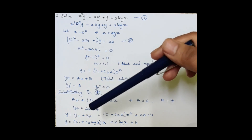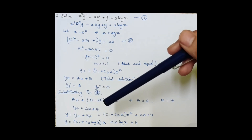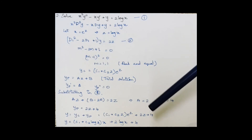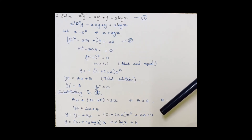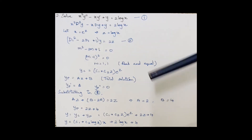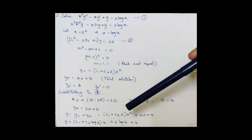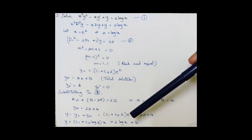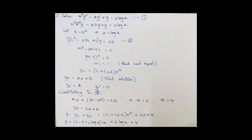The general solution is the sum of the complementary function and the particular integral. Substituting log x back in place of z, the final solution is (c1 + c2·log x)·x + 2·log x + 4.